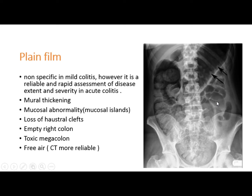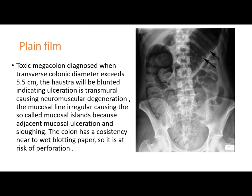Free air can be seen on plain film if there is perforation of the colon, though it is more reliably detected with CT. Regarding toxic megacolon, the transverse colon should be more than 5.5 cm and the haustra will be flattened due to neuromuscular degeneration.